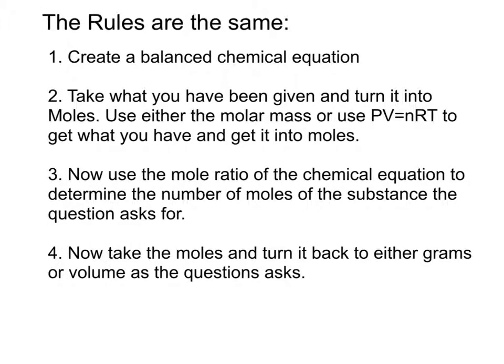The rules are the same. First, we create a balanced chemical equation. Second, we take what we've been given in the problem and turn it into moles. If this is grams, we use the molar mass from the periodic table. However, if this is volume, we can use PV = nRT to get what we have and convert it into moles.